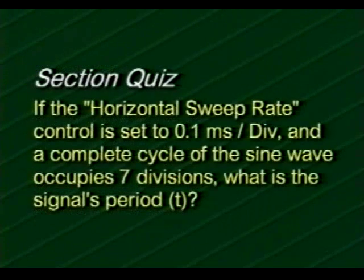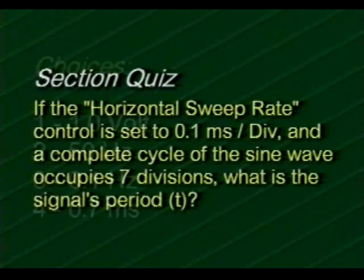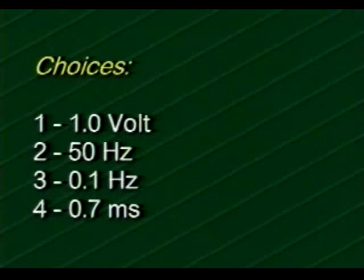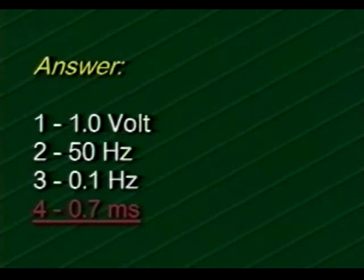Try this one. If the horizontal sweep-to-peak control is set to 0.1 milliseconds per division and a complete cycle of the sine wave occupies seven divisions, what's the signal's period? Your choices are 1 volt, 50 hertz, 0.1 hertz, or 0.7 milliseconds. If you selected choice four, 0.7 milliseconds, you're correct.